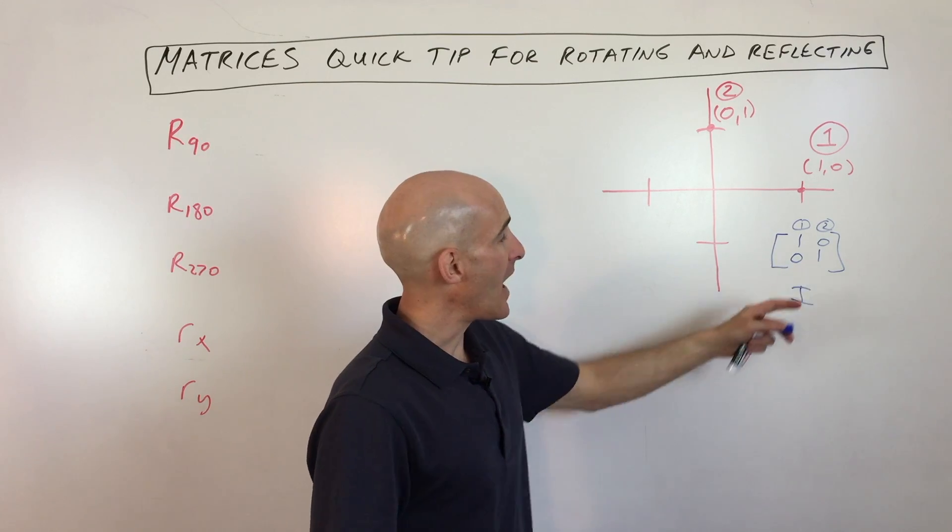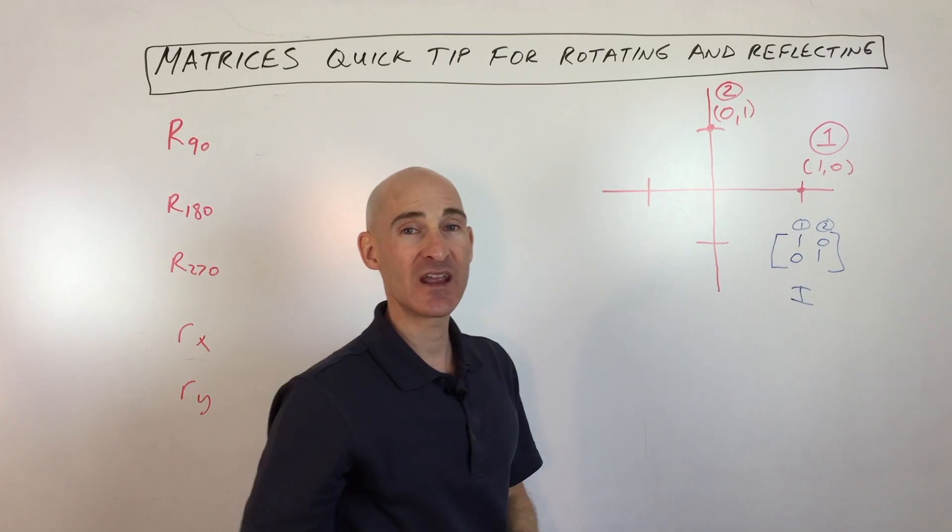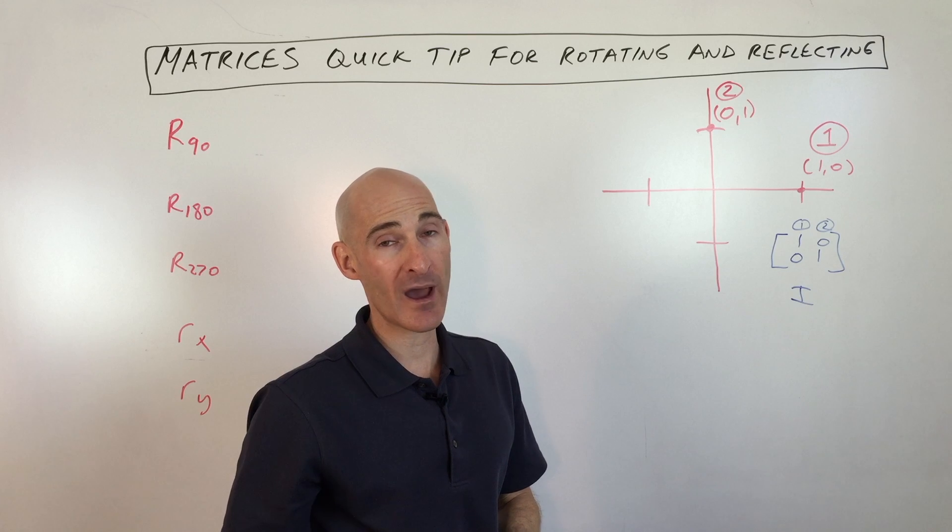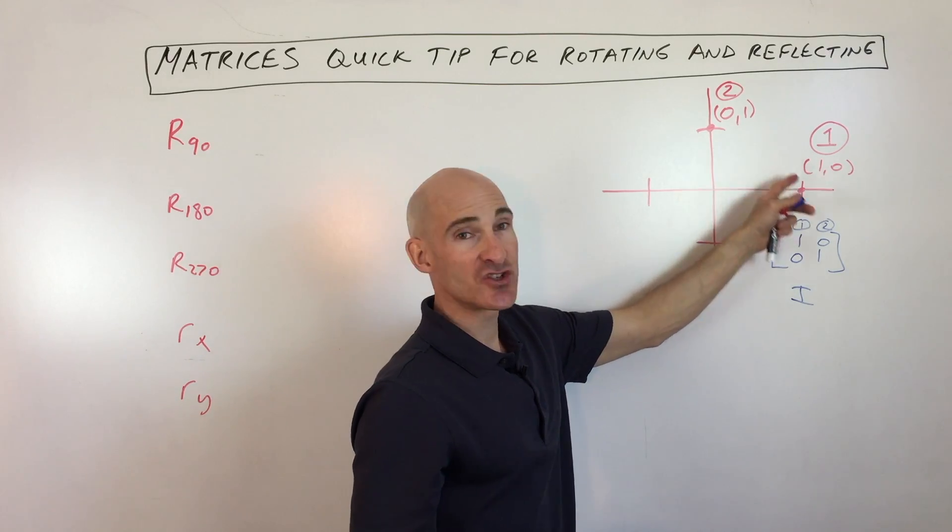And what we're going to do now is we're going to look at how does this matrix change as you rotate 90 degrees, 180, 270, and if you reflect over the x-axis, y-axis, or the line y equals x. It's very easy.